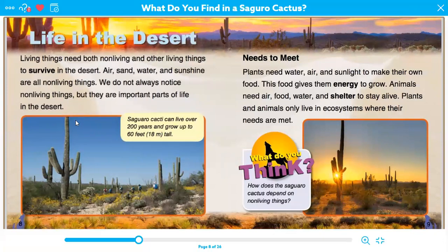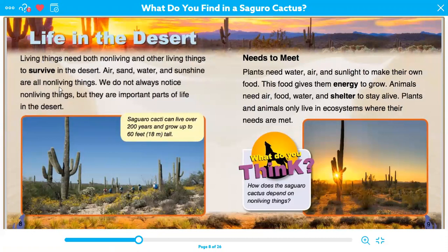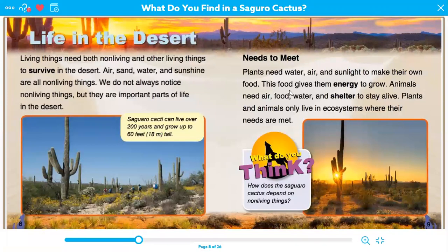So here we see the word survive, and that is a vocabulary word. We look around it for context clues to help understand what the word means. Plants need water, air, and sunlight to make their own food — this food gives them energy to grow. Animals need air, food, water, and shelter to stay alive. Plants and animals only live in ecosystems where their needs are met.